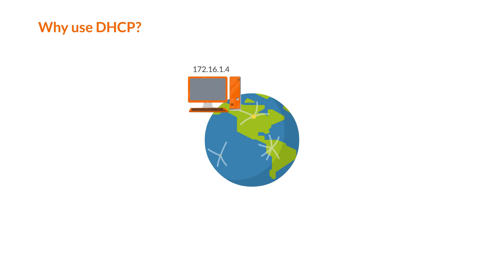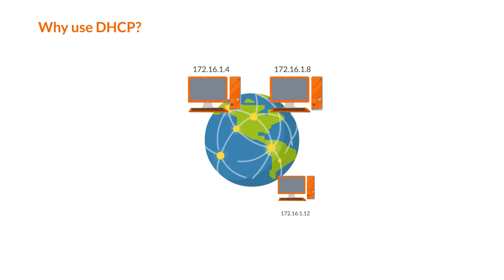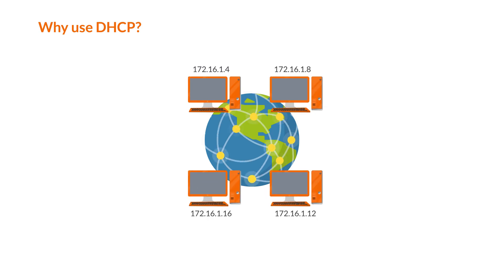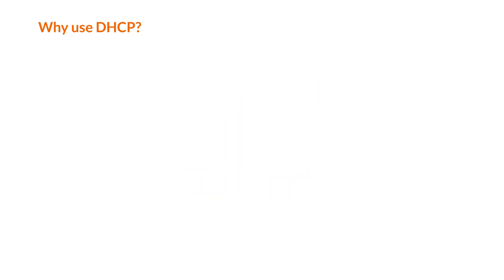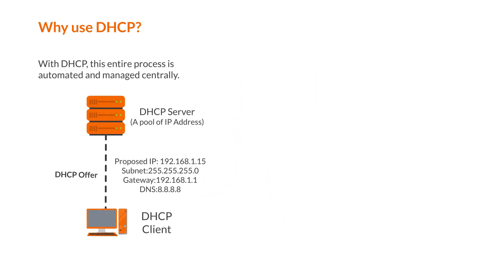Every device on a TCP/IP-based network must have a unique unicast IP address to access the network and its resources. With DHCP, this entire process is automated and managed centrally.